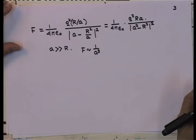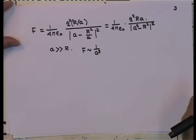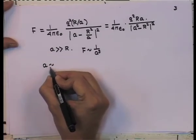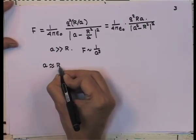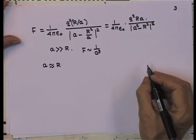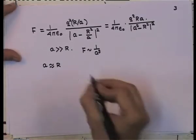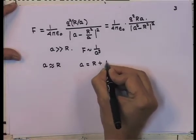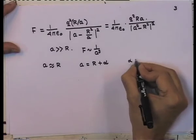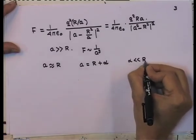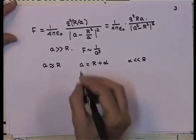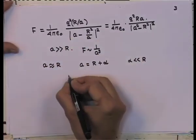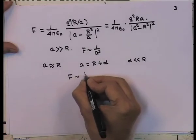On the other hand, if the charge is very close to the surface — a = R + α where α is much smaller than R — then you can calculate the force and find it goes as 1/α², just as it does near a flat conductor.